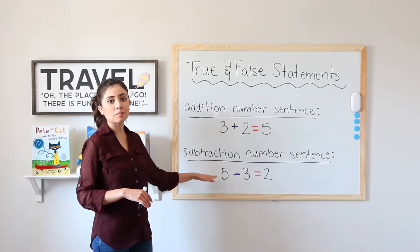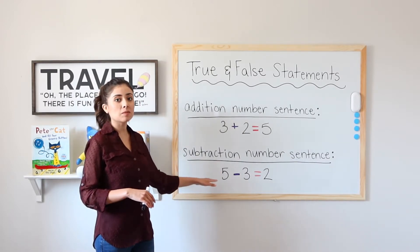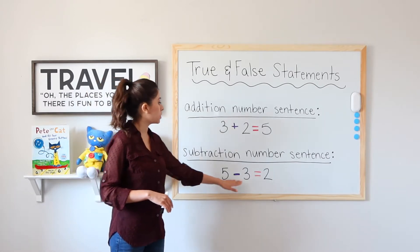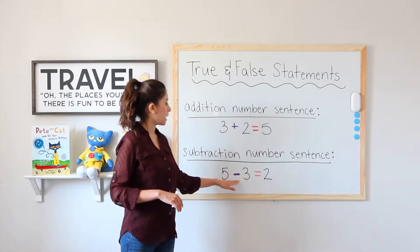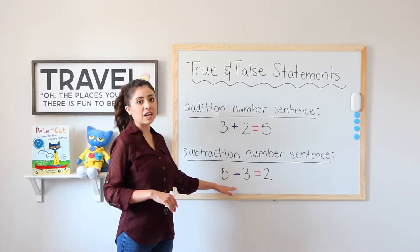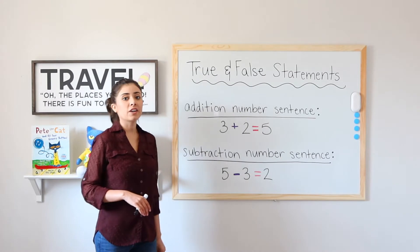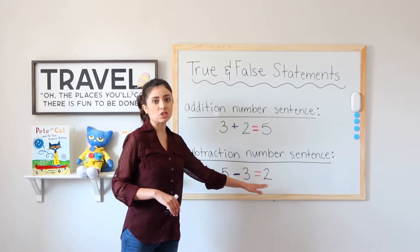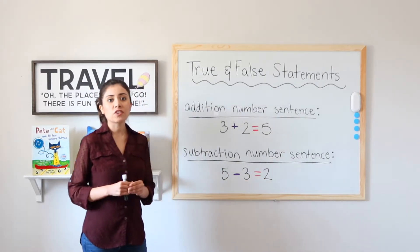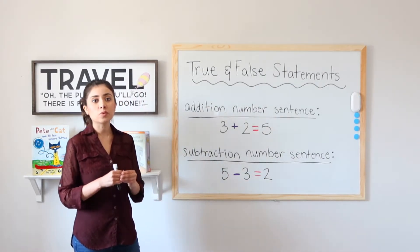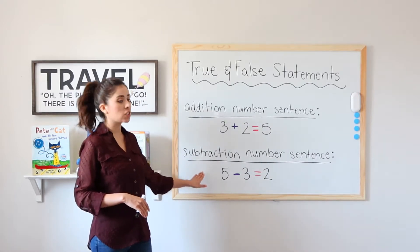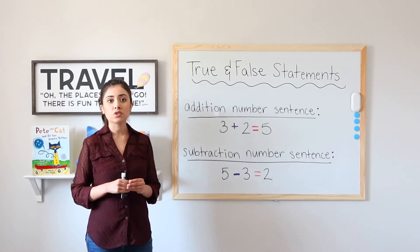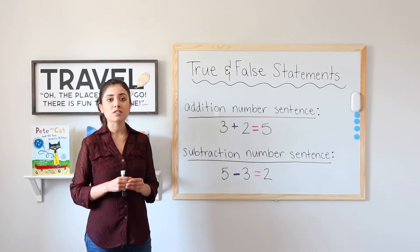Subtraction number sentence. A subtraction number sentence is an expression that uses numbers, a minus sign, and an equal sign. Here I have 5 minus 3 equals 2. So for this lesson, we will be focusing on subtraction number sentences and deciding if they are true or false.